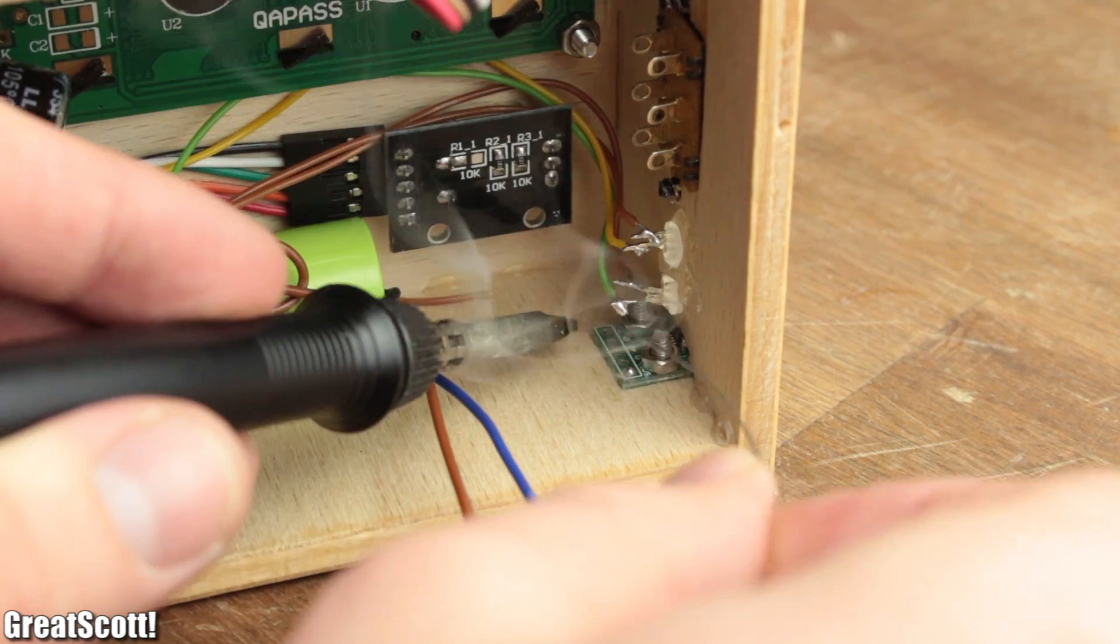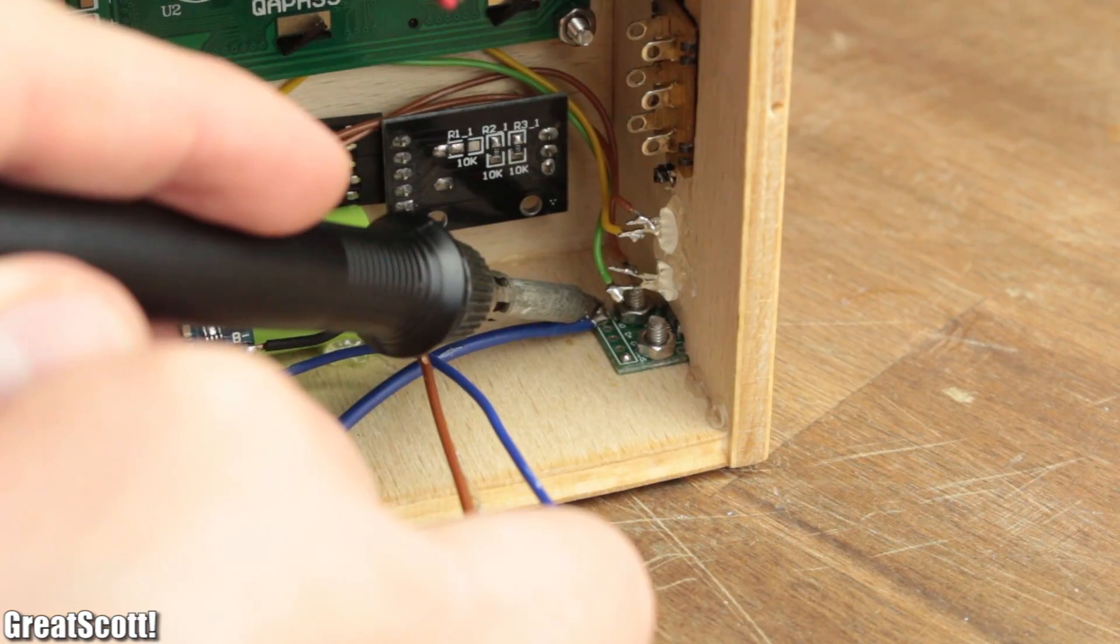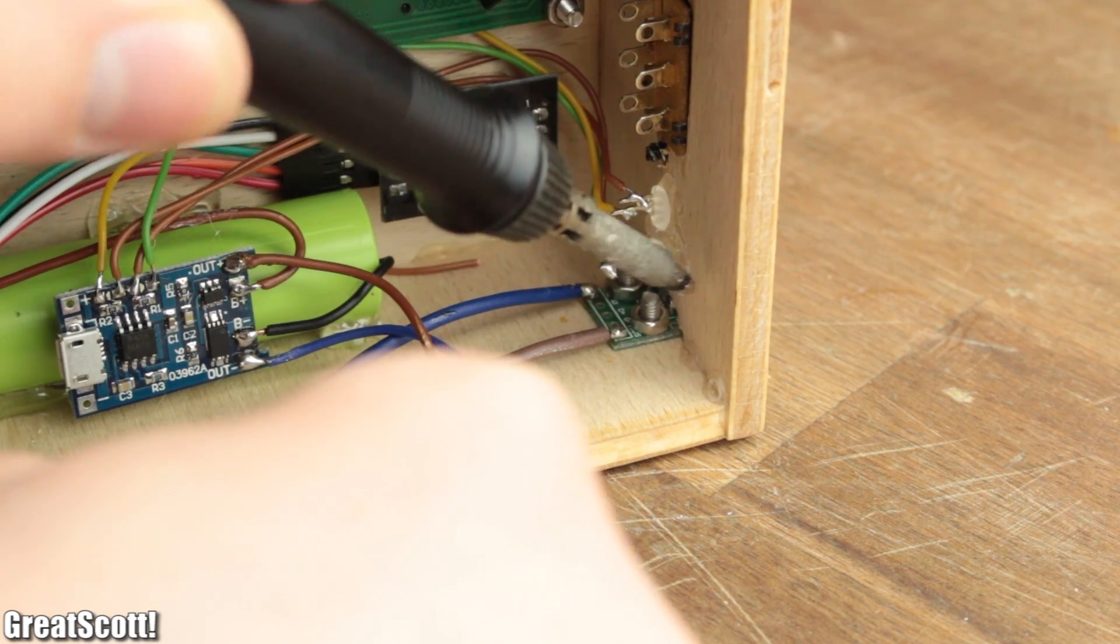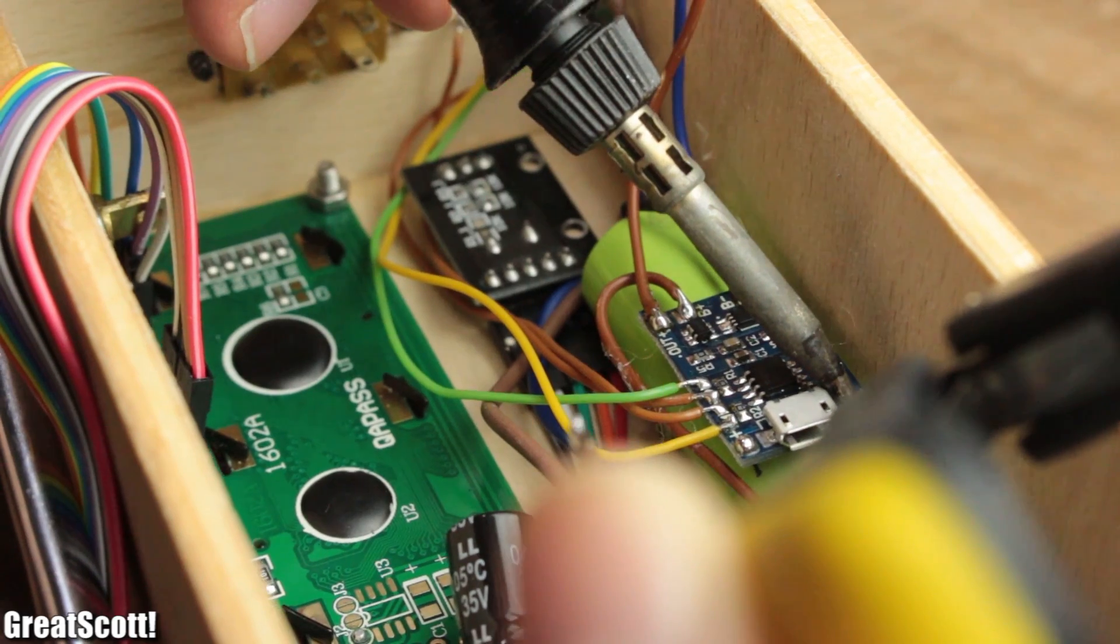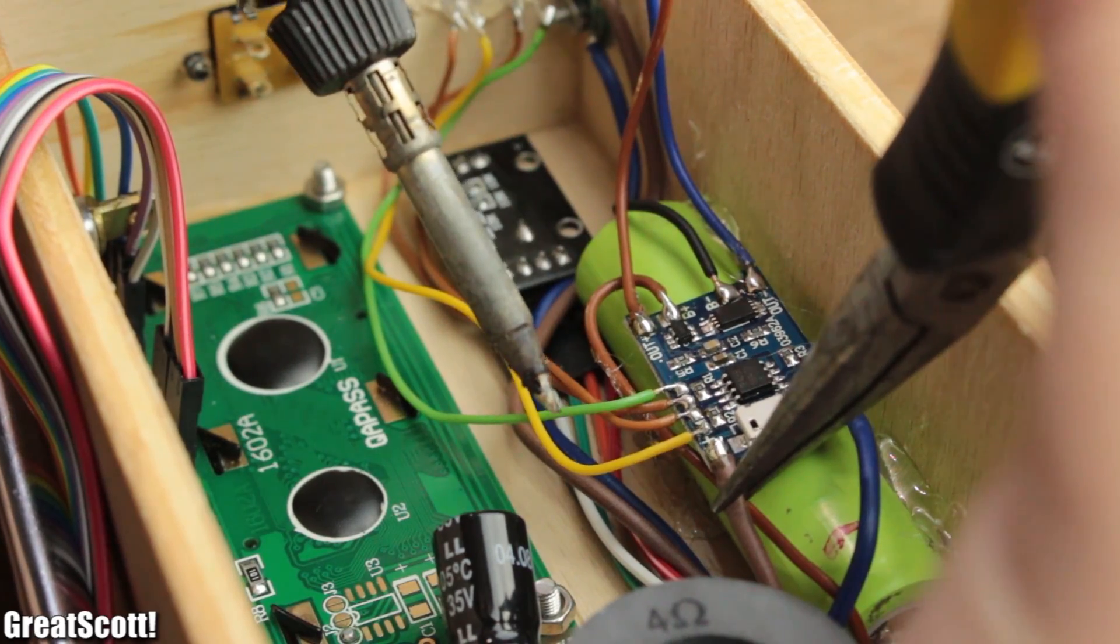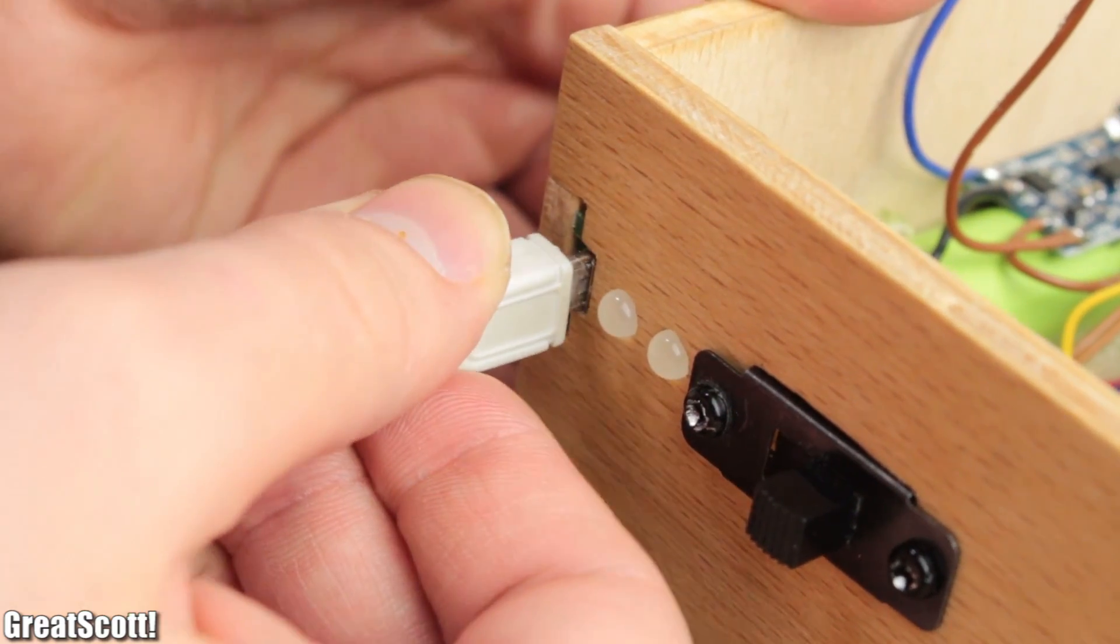To finalize the charging circuit, I soldered 0.75mm² flexible wire to the micro USB breakouts, which connects directly to the input of the TP4056 circuit. Because the following charging test was successful...